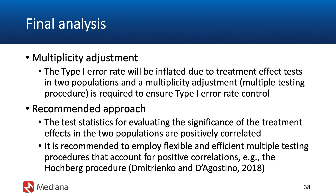To summarize, based on my work on several multi-population trials, I would recommend relying on a flexible testing approach, a flexible multiplicity adjustment such as the Hochberg procedure. It is not only flexible, it also takes advantage of the fact that the test statistics in the two patient populations — the overall population and the biomarker positive population — are positively correlated, and by taking this information into account you will end up with a more efficient multiplicity adjustment.